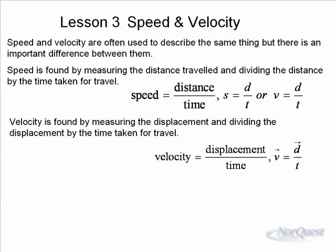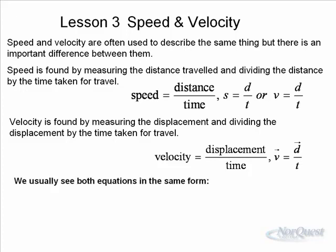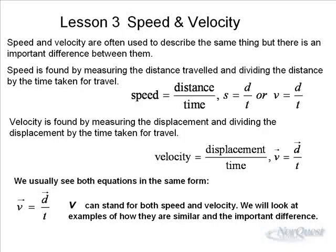You can see that we have drawn a little arrow above the v in the velocity equation. That little arrow indicates direction. Notice that in the speed equation there is no arrow — no direction is given. But in the velocity equation, there is an arrow over the velocity and also an arrow over the displacement. The equations are basically the same form: v = d/t, and v can stand for both speed and velocity.